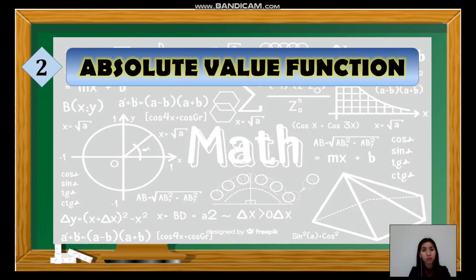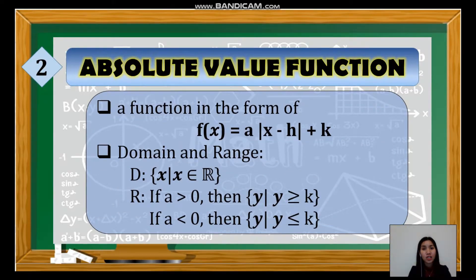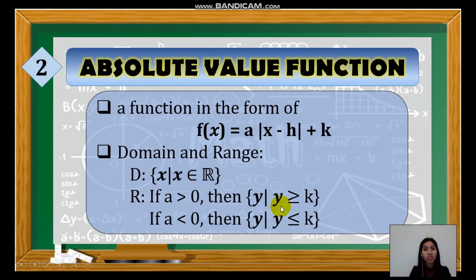After the polynomial function, we have the absolute value function. It is a function in the form f(x) = a|x − h| + k. The domain is always the set of real numbers. For the range: if a > 0, the range is y ≥ k; if a < 0, the range is y ≤ k.